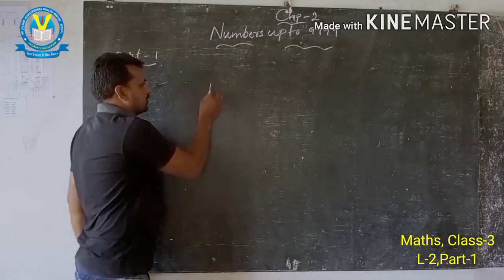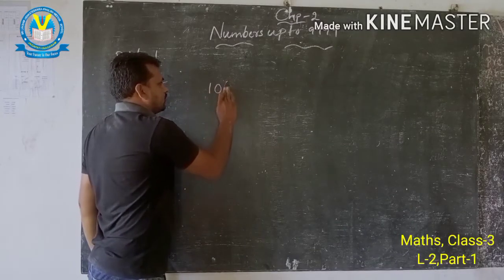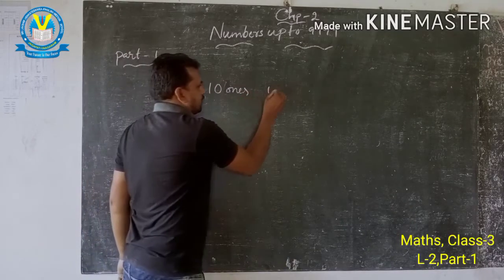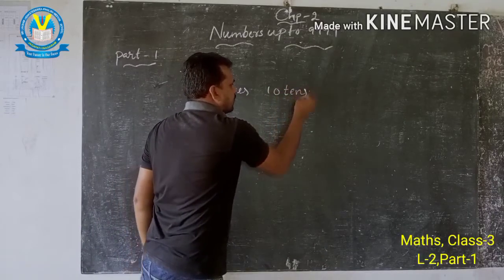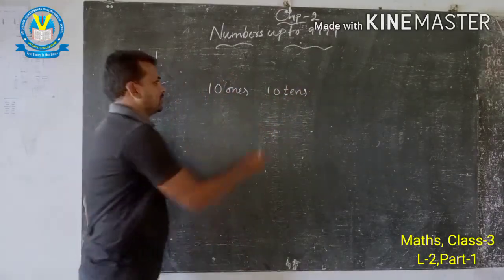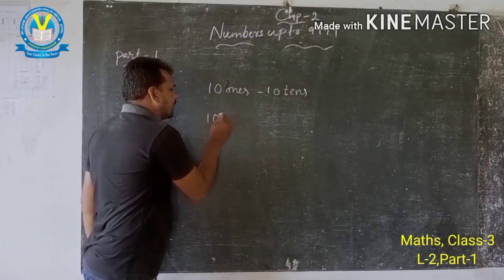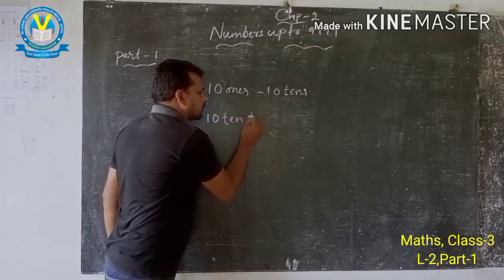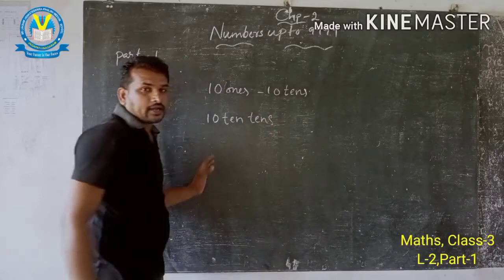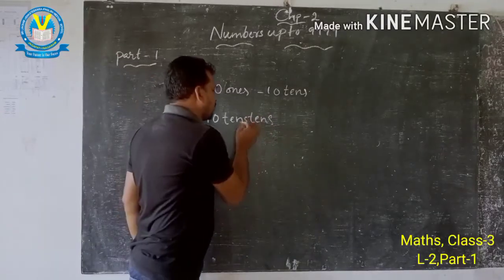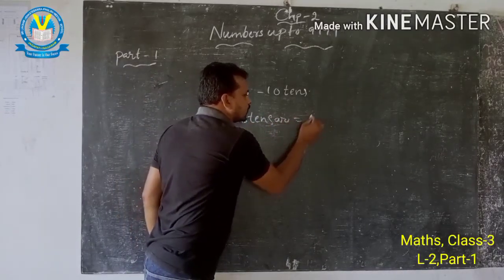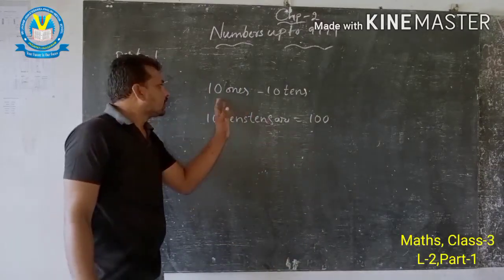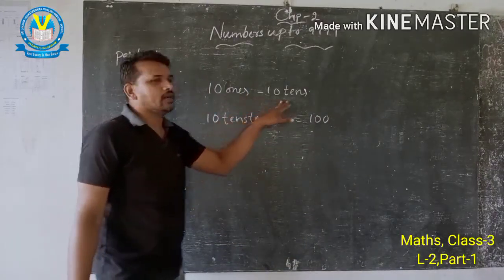10 ones are 10. And 10 tens are equal to 100. So 10 ones make 10, and 10 tens make 100.